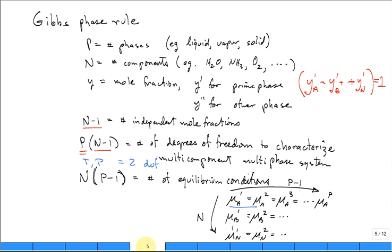Now we shift to talk about Gibbs phase rule. Gibbs phase rule is an equation to tell us how many independent intensive properties we need to determine to fix the state of a multi-component, multi-phase system.